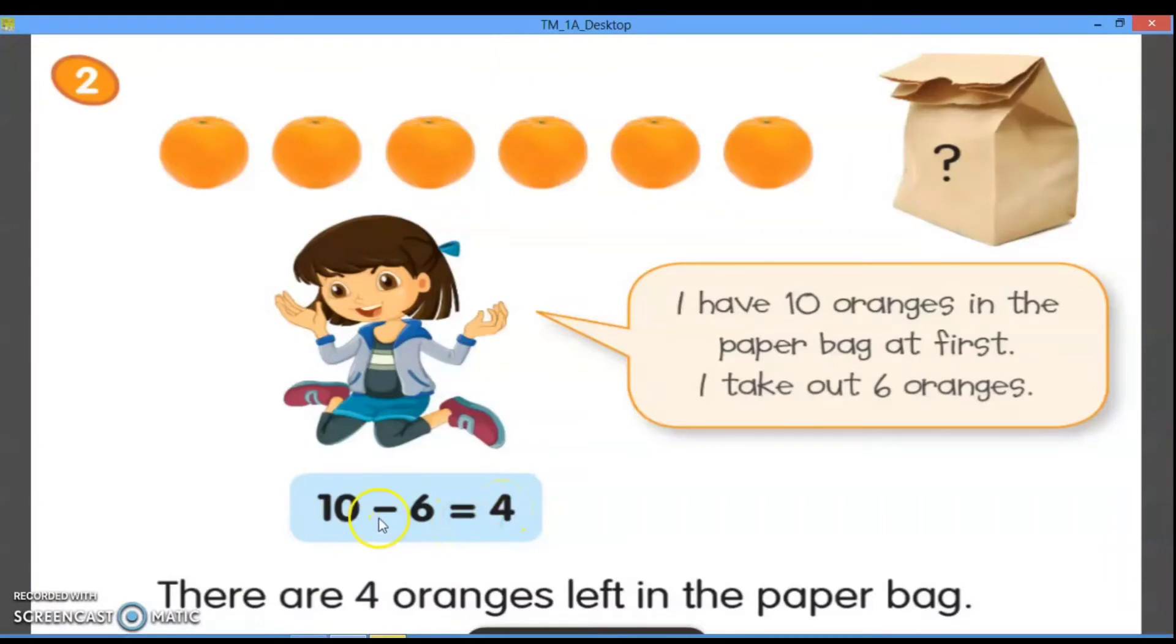Atau, ten minus six equals four. Jadi, sepuluh adalah jumlah jeruk yang ada di paper bag. Kemudian, dikurang enam, enam adalah jeruk yang diambil atau dikeluarkan. Maka, hasilnya adalah there are four oranges left in the paper bag. Jadi, ada empat jeruk yang tersisa di dalam paper bag.